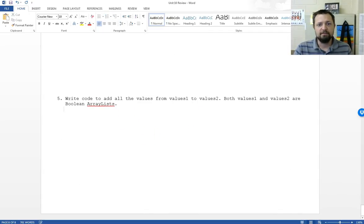Write code to add all the values from values one to values two. I'm going to do a for each loop. For boolean B colon values one - values two dot add B. Go through every item and add it to the other list. Alright, and we are done.